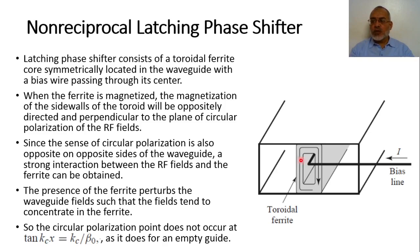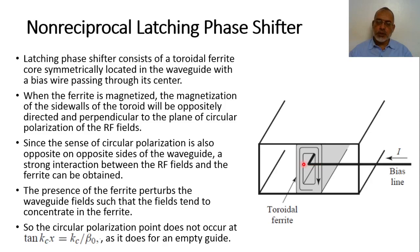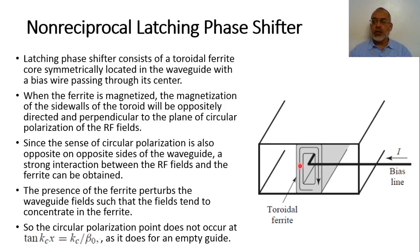On one side the magnetization is downward and the circular polarization is right-hand circular polarization. On the other side the magnetization is upward and the circular polarization is left-hand circular polarization. This means that the direction of circular polarization and the direction of magnetization are both opposite on the two sides. So effectively the effect of both walls is the same, because we have changed both the direction of magnetization and the direction of circular polarization. Since the sense of circular polarization is always opposite on opposite sides — right-hand on one side, left-hand on the other — a strong interaction between the RF fields and the ferrite is obtained, effectively doubling the interaction between the RF signal and the magnetization inside the ferrite.